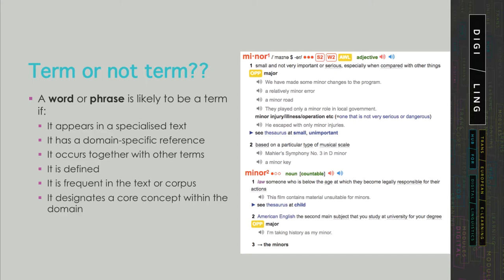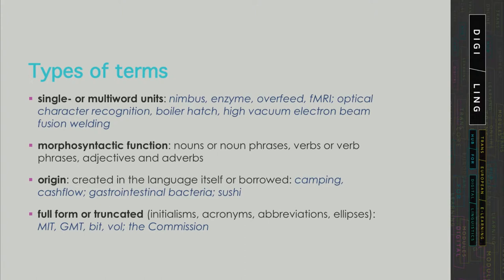Having seen some examples, we can categorize terms on the basis of their linguistic properties. They can be single words or multi-word units such as 'boiler hatch' or 'high vacuum electron beam fusion welding'. They can appear in different morphosyntactic functions — they can either be nouns or noun phrases, which are by far the most frequent.